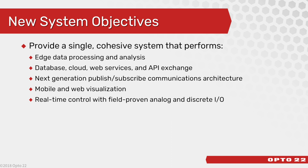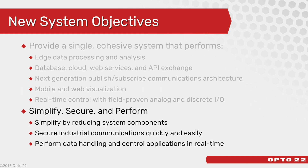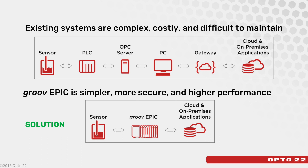We wanted to build a single cohesive system offering edge computing, easy data exchange with other systems, mobile and web visualization, and much more — all combined with the real-time control and industrial I/O the industry knows us for. We wanted to do this by significantly reducing the barriers to success by doing three things: dramatically reducing system components, embedding security at every turn, and still performing at the highest levels. We wanted to build a system that is simpler, more secure, and higher performance than anything else on the market. And we think we've done it.